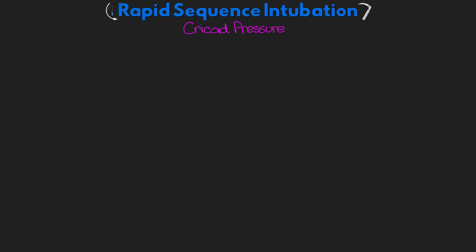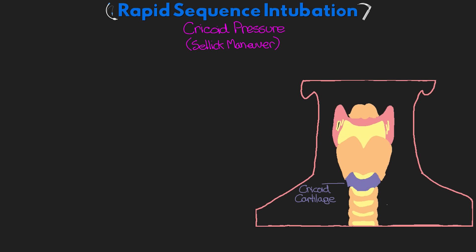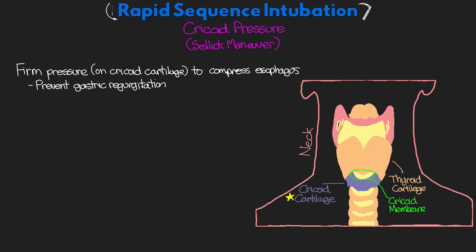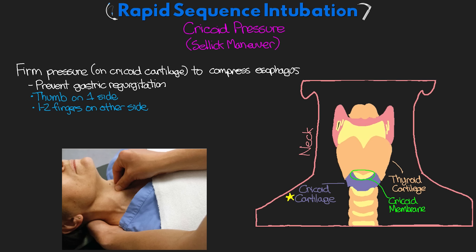Another key difference with RSI is something called cricoid pressure, also known as the Sellick maneuver. The cricoid cartilage is the first tracheal cartilage ring below the larynx and the only continuous cartilage ring below the larynx. It can be found by following the neck down from the prominence of the thyroid cartilage — the Adam's apple — until you feel the first depression, which is the cricoid membrane. The cricoid cartilage is the next cartilage ring below there. Cricoid pressure consists of applying firm pressure to compress the esophagus and prevent any potential gastric regurgitation. You utilize your thumb on one side of the cricoid cartilage and one to two fingers on the other side, making sure pressure is not applied to the larynx or the thyroid cartilage.